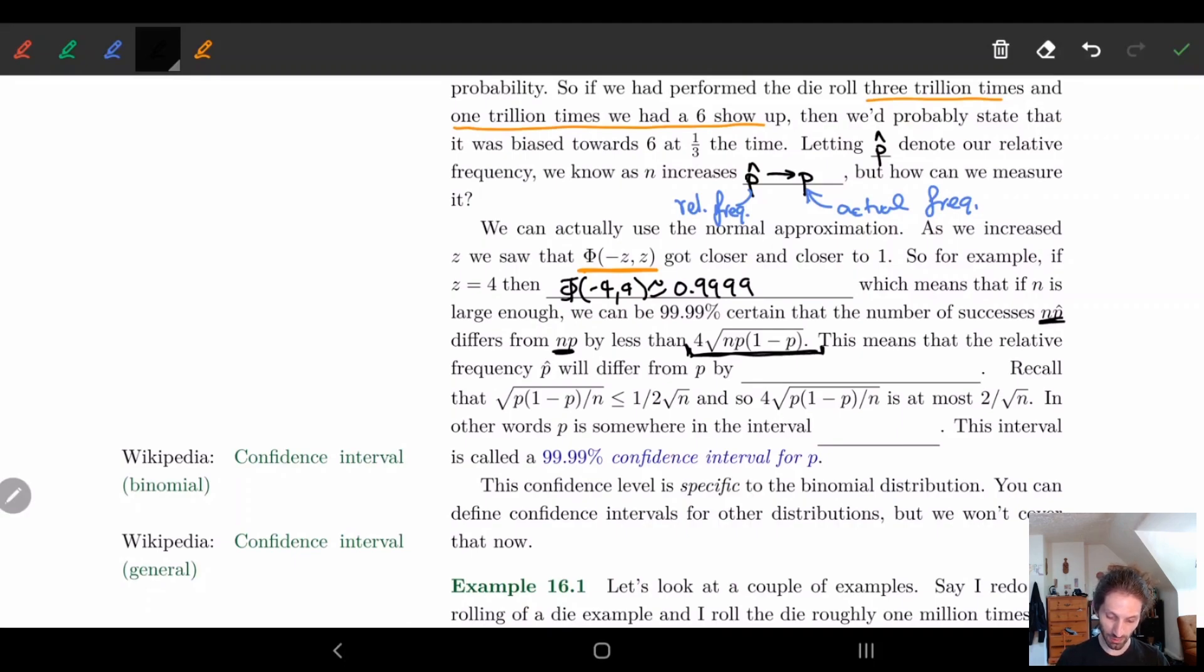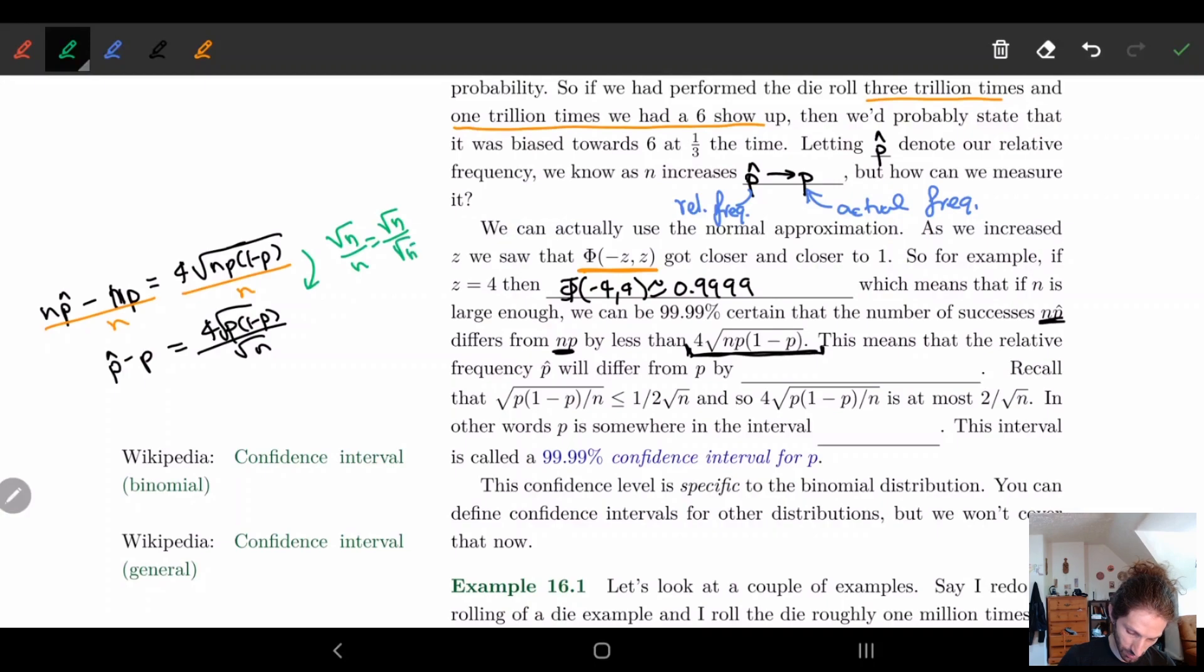And basically what this means is that the relative frequency p hat will differ by, so here just divide by n both sides. So what we do is we take, right? So we're looking, we had np, np hat minus np is roughly equal to 4√(np(1-p)). So if I divide both sides by n, what I get is the difference between p hat and p is equal to 4√(p(1-p))/√n. So here what I did, in case you're a little confused, this is just n over n squared, right? So it's one over square root of n. So it's going to differ by 4√(p(1-p))/n. So all of this is under the square root brackets.